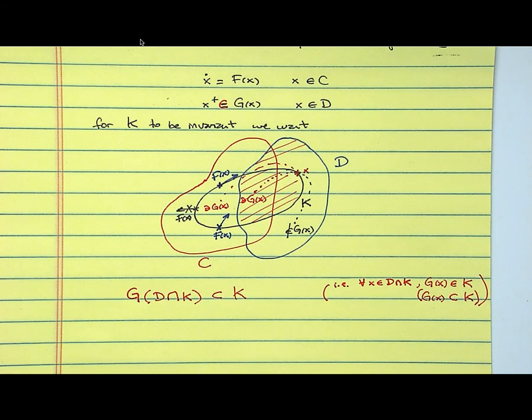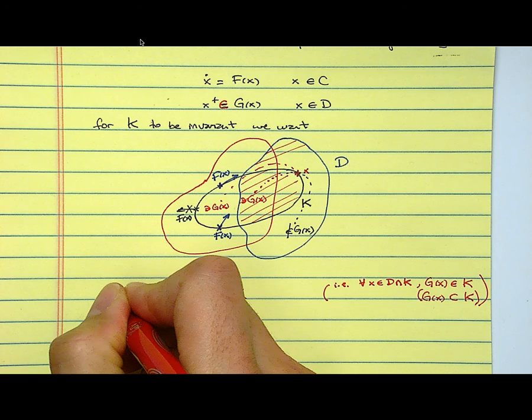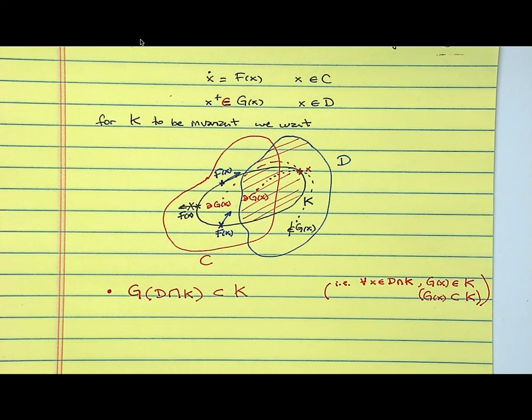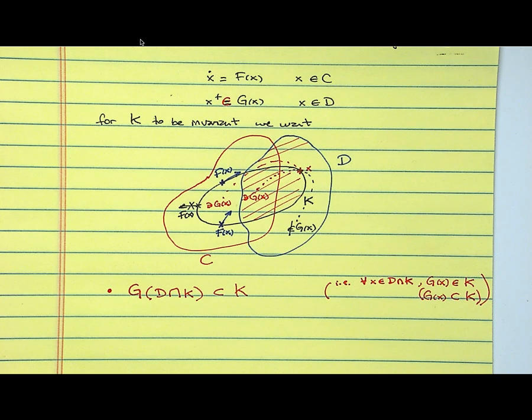So what is this amounting for us? It's an evaluation of a function, which could be set-valued, on a set that gives you a set. That set needs to be contained in another set. You can do this brute force: you code a function G, you code the set D and K, you intersect it, and then you check all the points, you make a grid. But you can do it analytically.